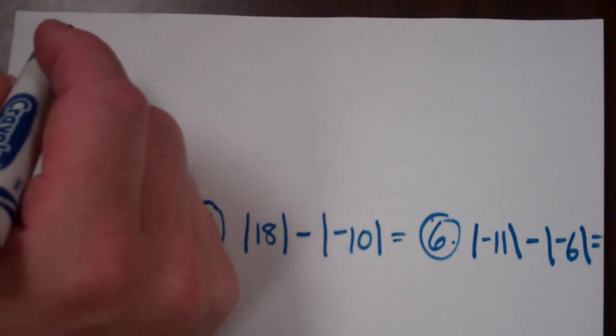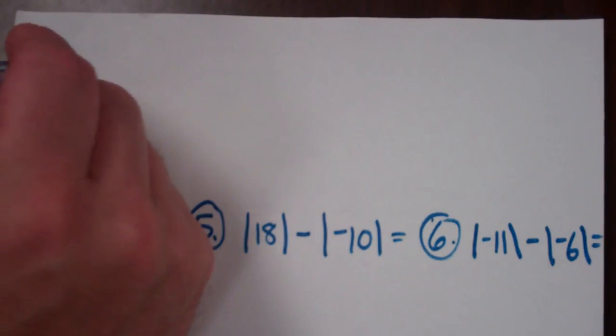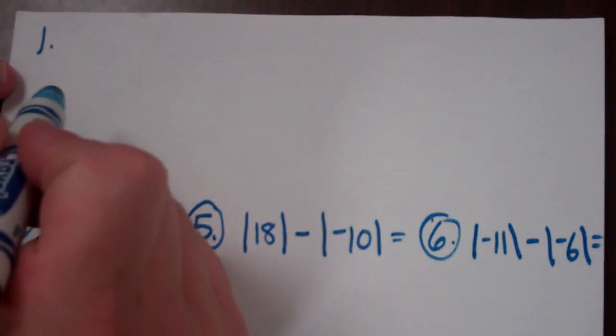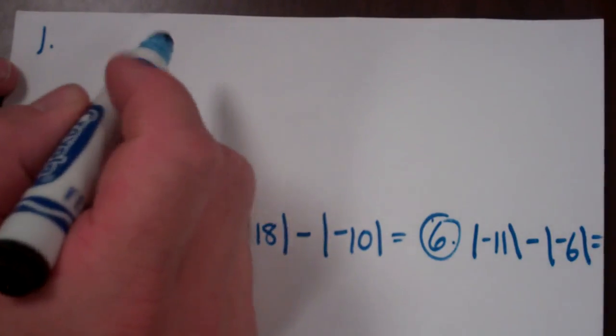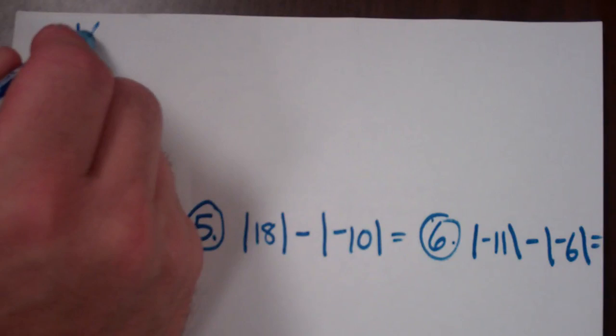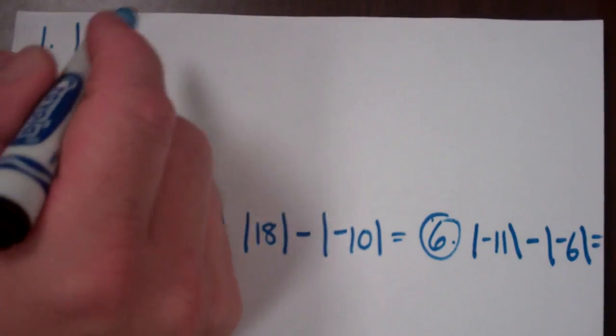The first one says, write an integer for each situation. Number one says, a deposit of $16. So I have to think about whether a deposit is a positive or a negative thing. You put money in the bank, so that would be a positive 16. Remember, we don't have to write the positive, we just write 16. It's understood.